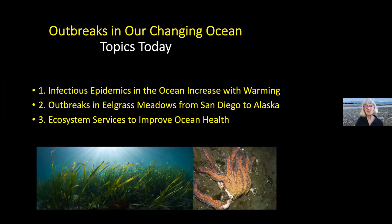A comment about terminology: a pandemic is an epidemic occurring worldwide or over a very wide area, crossing international boundaries. Anything crossing continental-scale locations qualifies as a pandemic. In that sense, any one of the outbreaks I'm talking about would be a pandemic. Climate change can act directly and through biological interactions such as disease to unravel ocean ecosystems — that's the theme of my book.